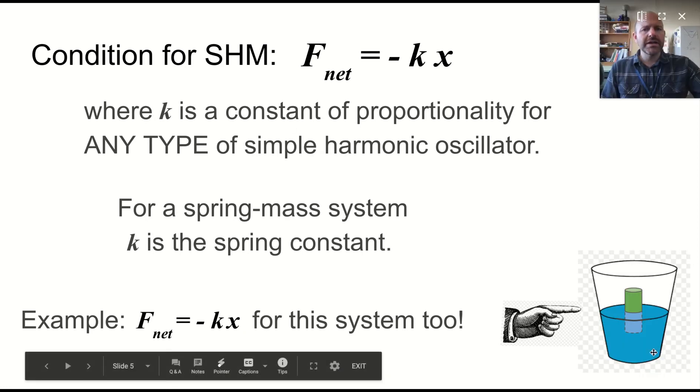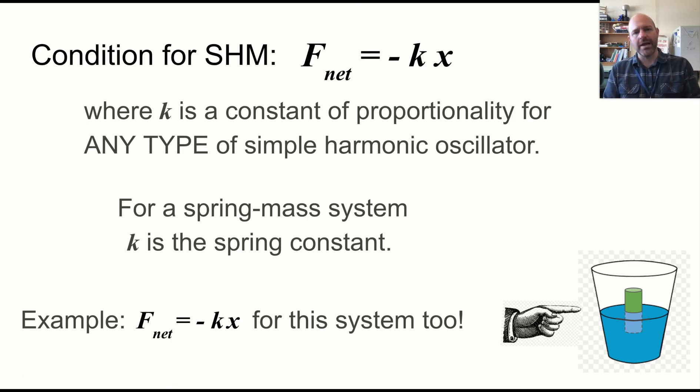So the condition for simple harmonic motion basically says that the net force behaves in this way, that it is directly proportional to some displacement from equilibrium. And we have that negative sign, meaning it's in the opposite direction.